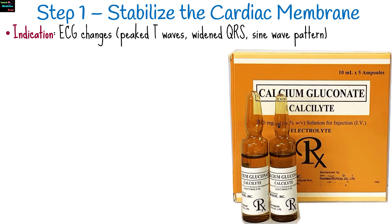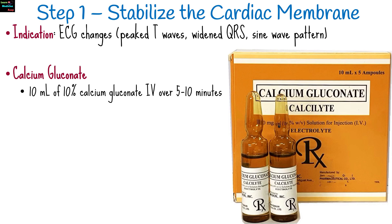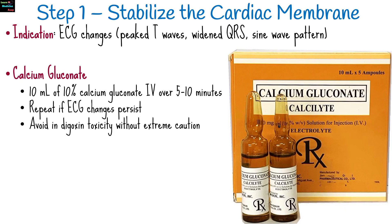The first step is to stabilize the cardiac membrane, usually indicated when there are ECG changes. 10 mLs of 10% calcium gluconate IV over 5 to 10 minutes is administered. It is repeated if ECG changes persist and avoided in digoxin toxicity.